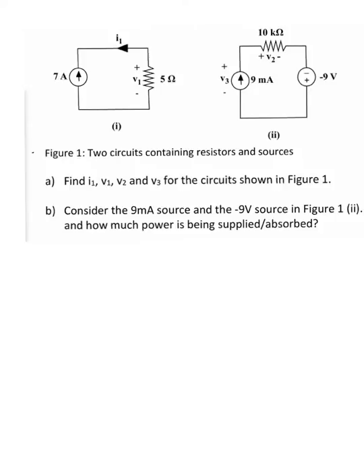The first question asks you to find I1 and V1 in this first little circuit. We can see here there's a current source and the current is flowing in this direction, so we know because it's an ideal current source that there are seven amps flowing everywhere around the circuit in this direction.